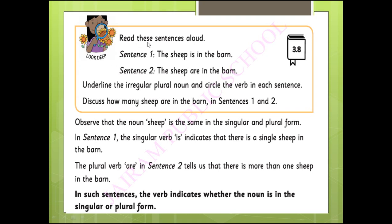Here is an activity. Read these sentences aloud. Sentence one: 'The sheep is in the barn.' Sentence two: 'The sheep are in the barn.' For singular and plural, we use the same word sheep. Underline the irregular plural noun and circle the verb in each sentence. The singular verb 'is' indicates one sheep; the plural verb 'are' tells us there is more than one sheep. In such sentences the verb indicates whether the noun is singular or plural.